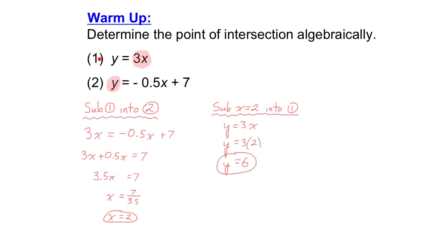Now that we know what x is, we can go back to one of our original equations and solve for y. I chose to substitute my value of x into equation 1. 3 times 2 is 6, so y is 6. So the point of intersection is (2, 6). Hopefully you can remember from grade 10 how to do this. If not, you should pause the video and ask for some help before you move on to the lesson.